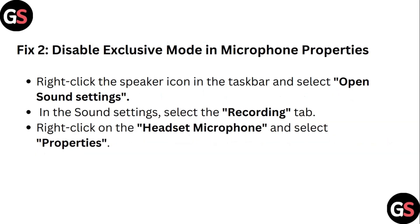Step 2: Disable Exclusive Mode in Microphone Properties. Right-click the speaker icon in the taskbar and select Open Sound Settings. In the Sound Settings, select the Recording tab. Right-click on Headset Microphone and select Properties.